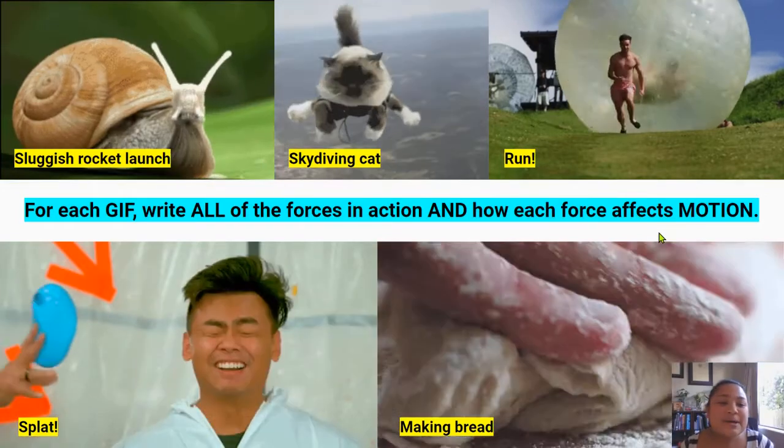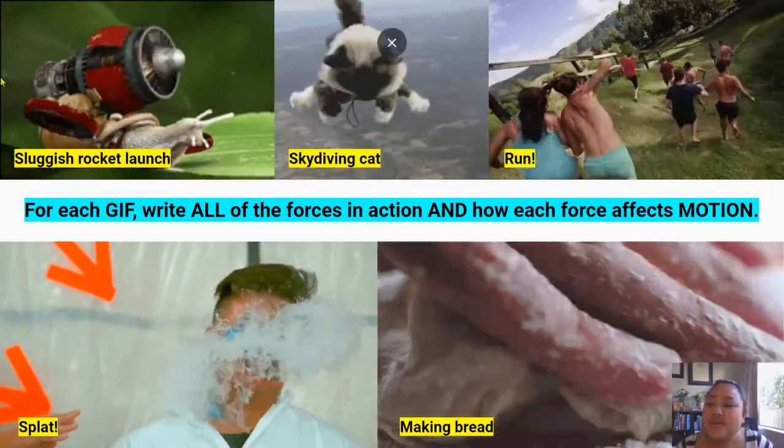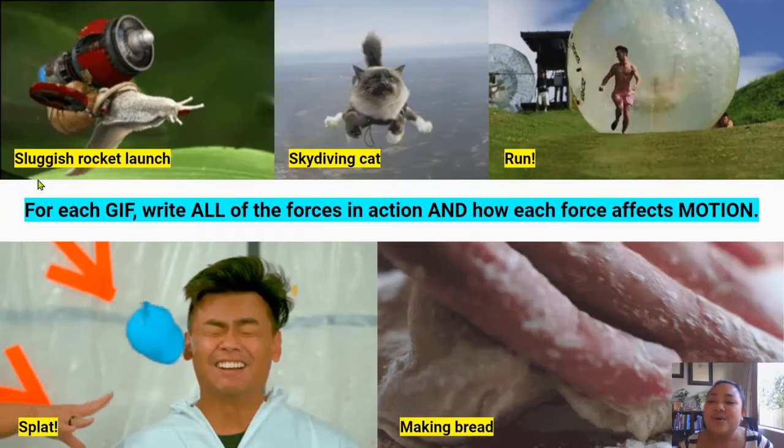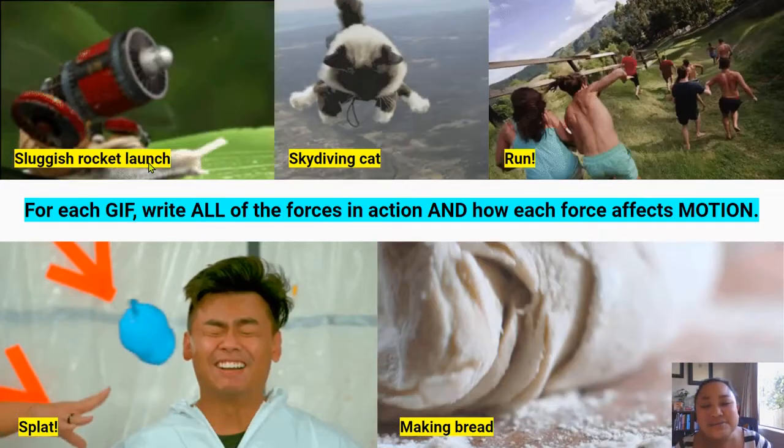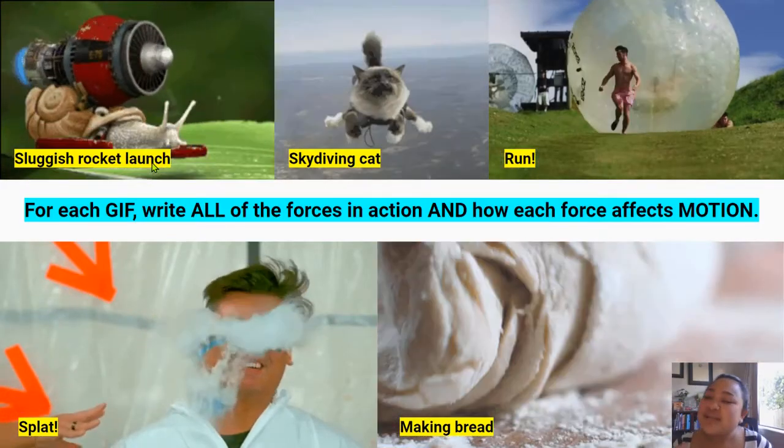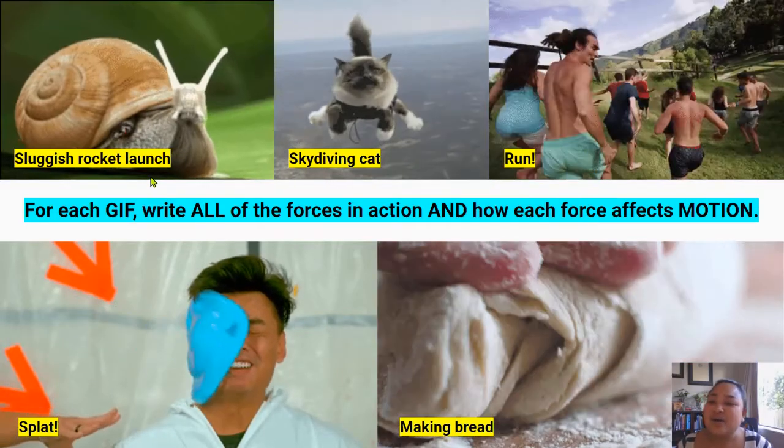Okay, so let's pick one of these and do it as an example. So let's go with this top left hand corner. It's called sluggish rocket launch. It's a play on words because it's a slug and it's a rocket launch. Okay, so let's think of some of the forces that are acting on this sluggish rocket launch.